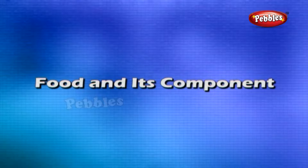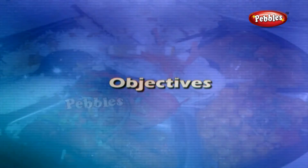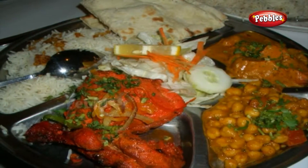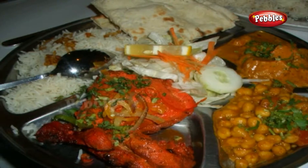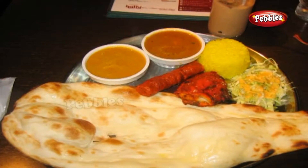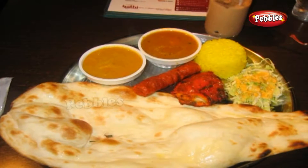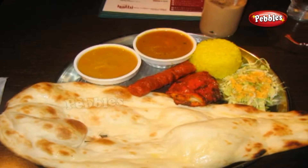Food and Its Components. Objectives: The chapter Food and its Components illustrates the vital nutrients of the diet, nutrition charts, and also the chemical composition of the essential nutrients.